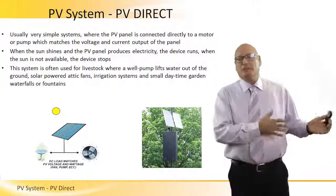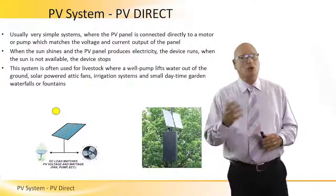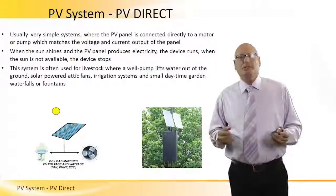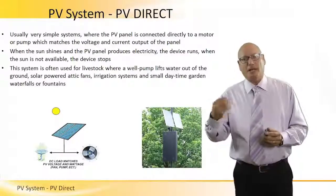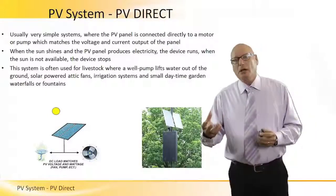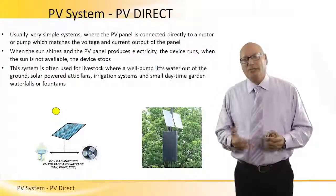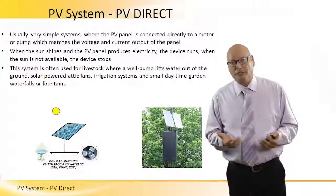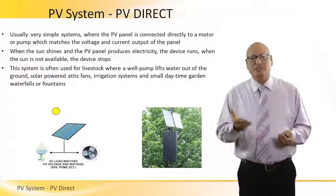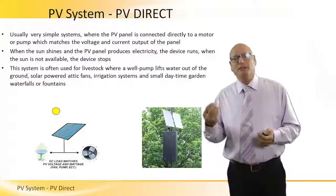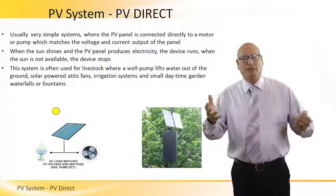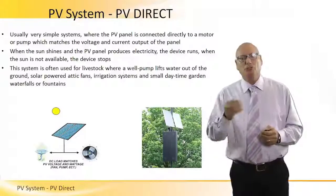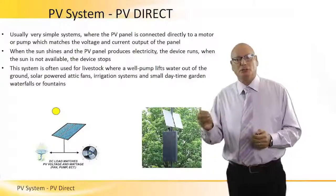The smaller scale PV systems are basically what we call PV direct. PV direct means that the applications, the appliances, the loads are basically DC loads. They need DC voltage in order to operate. Usually, even in very simple systems, the PV panel is connected directly to a motor or a pump which matches the voltage and the current output of the panel.